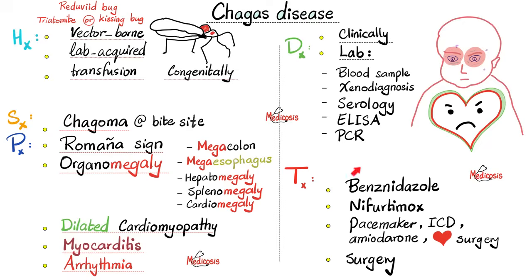Here is everything you need to know about Chagas disease on one slide. Causative organism: Trypanosoma cruzi. Vector: the kissing bug, also known as the triatomine or reduviid bug — that's the vector-borne variant. Also: lab-acquired, transfusion-acquired, or congenitally-acquired Chagas disease. Clinical features: chagoma at the bite site, Romaña's sign (unilateral eyelid and eye swelling), organomegaly including megacolon, megaesophagus, hepatomegaly, splenomegaly, cardiomegaly, and dilated cardiomyopathy. Diagnosis: blood sample, peripheral smear, xenodiagnosis, serology, ELISA, PCR. Treatment: benznidazole, nifurtimox, pacemaker, ICD, amiodarone or heart surgery for heart disease, and surgery for colon or esophagus when other methods fail.